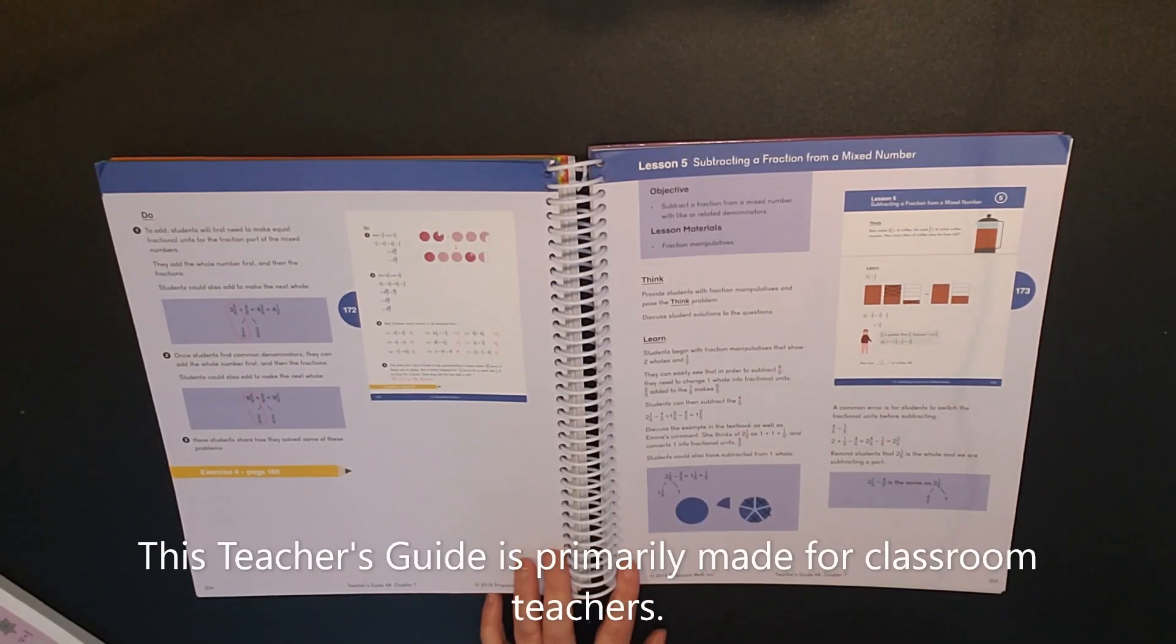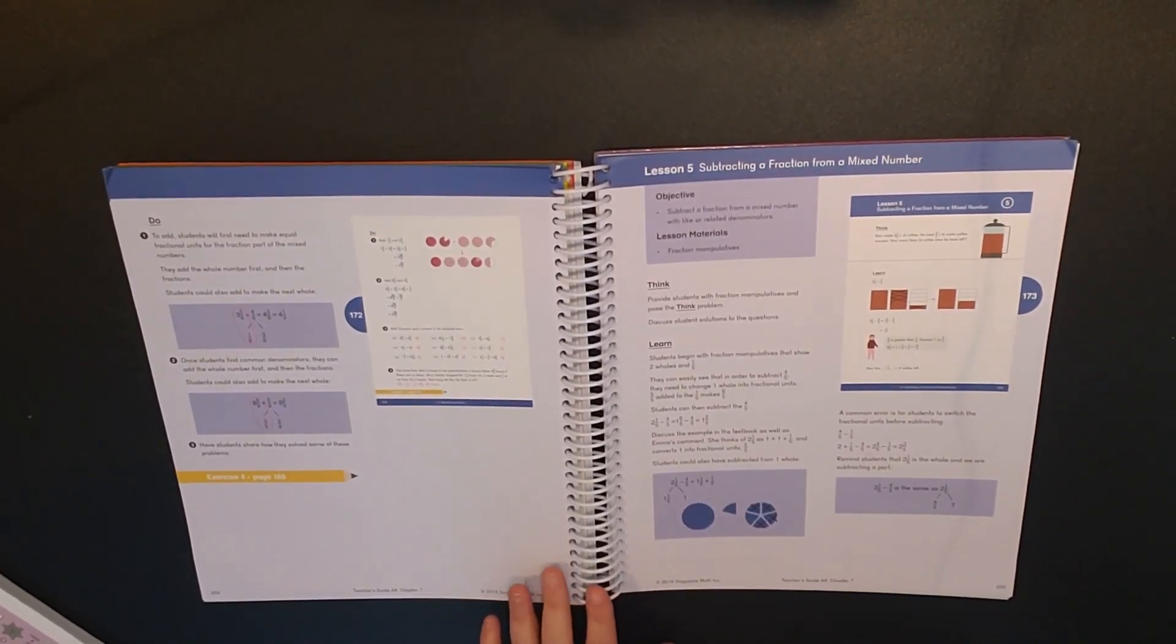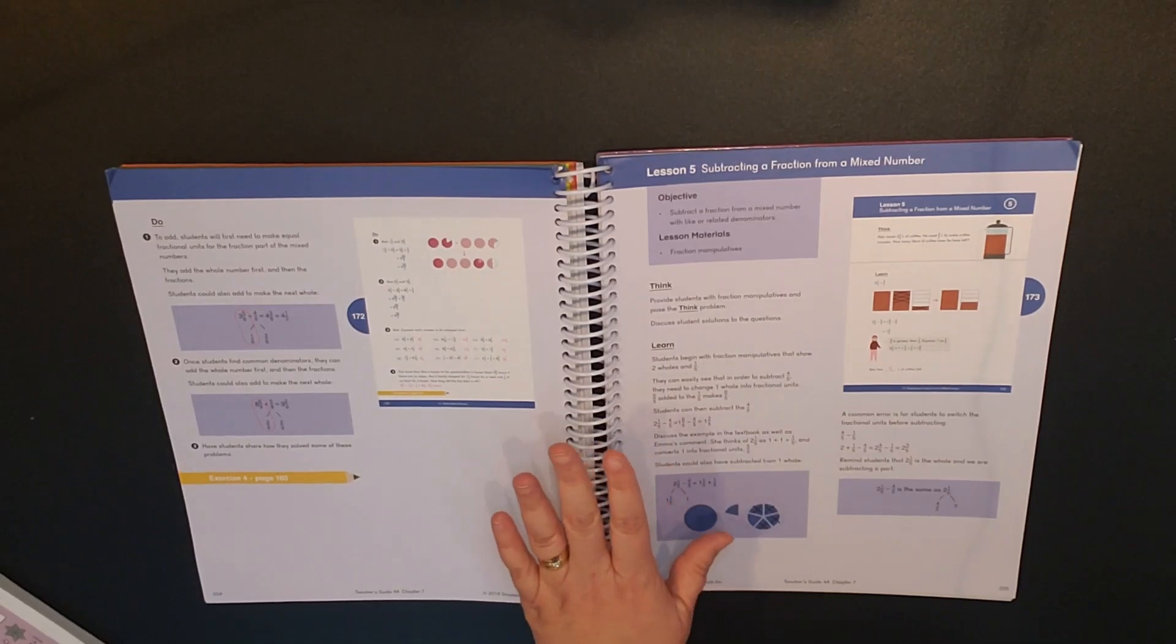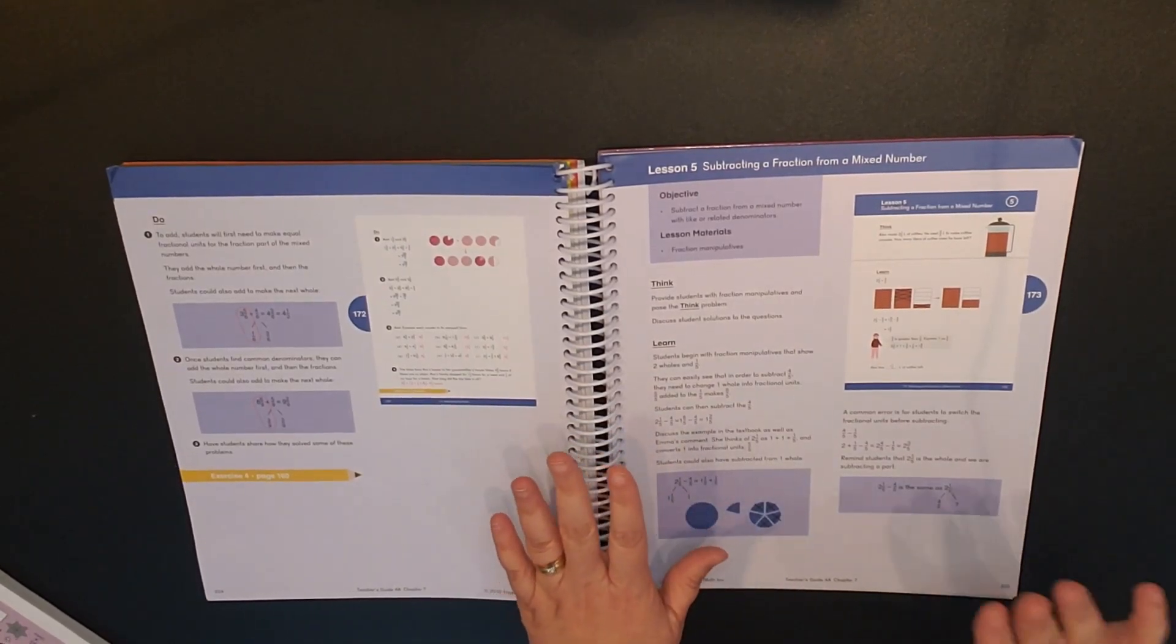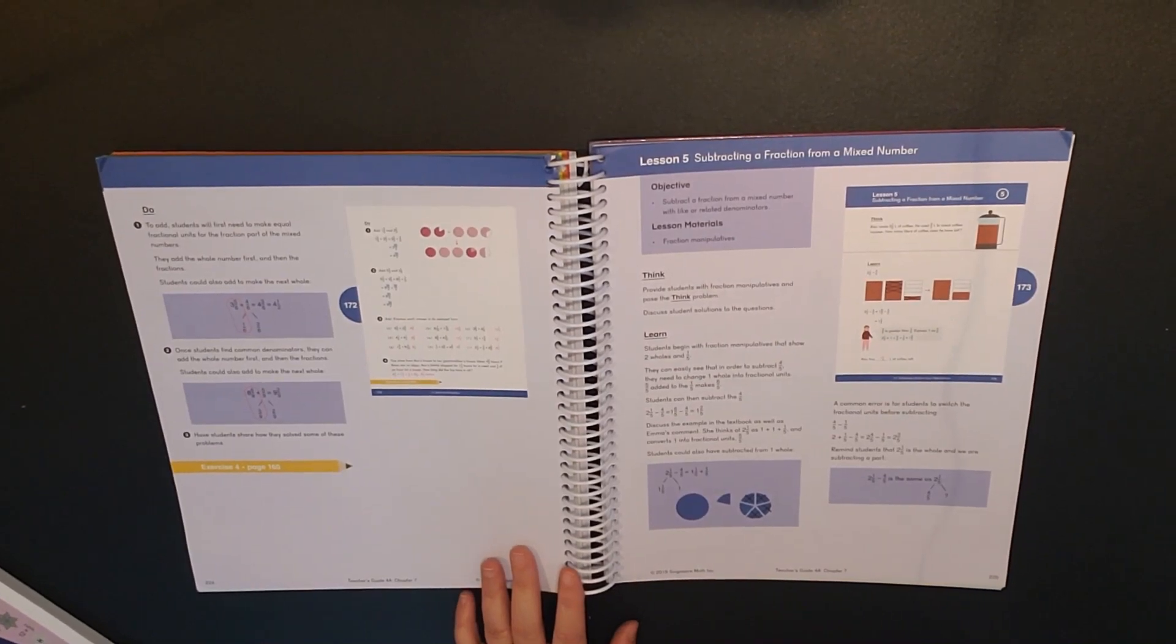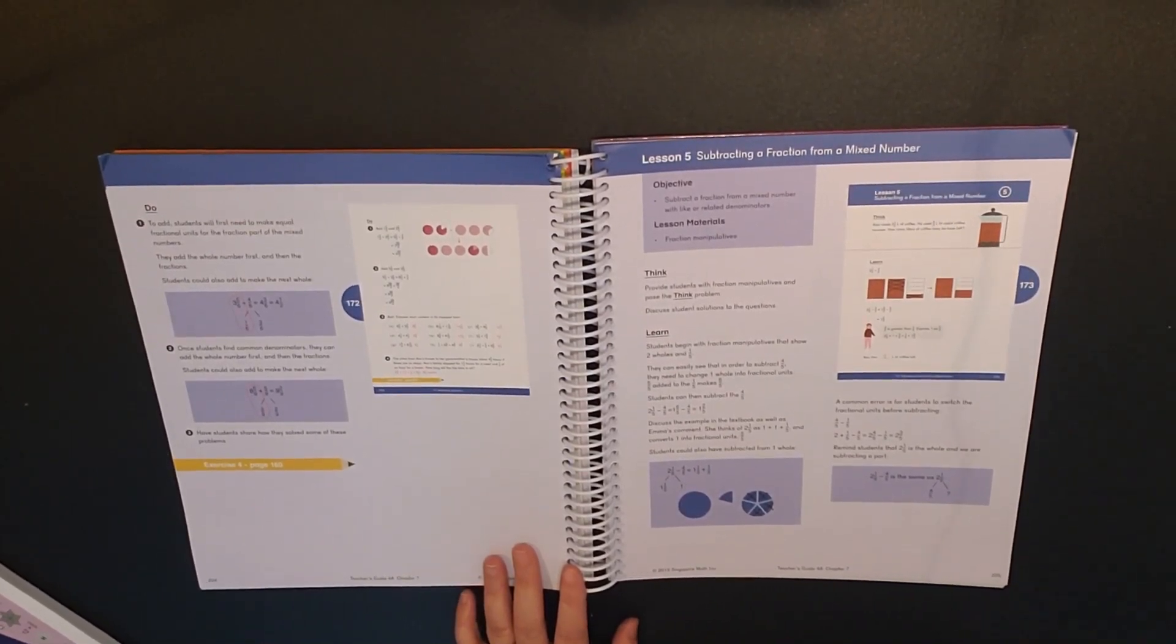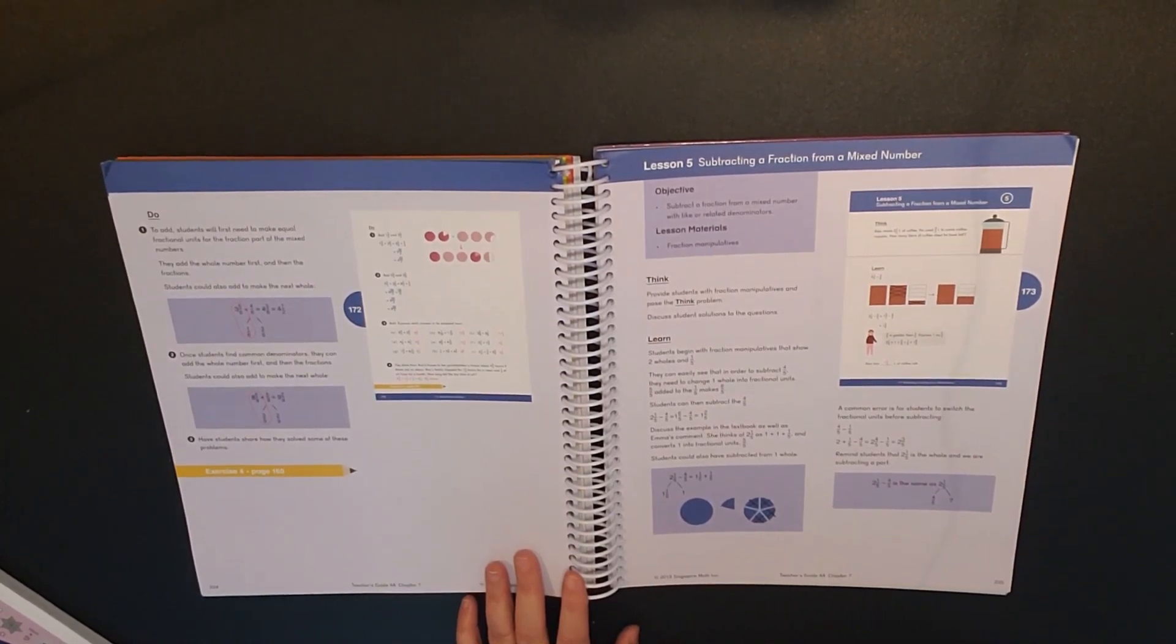Dimensions does have an at home video. It's for $85 for one year. So it would cover both the A and the B of the year. And again, that's for $85. I do not know very much about that because I don't utilize the video portion.